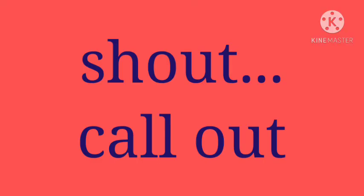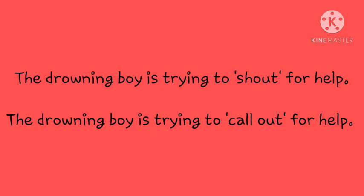The next word is 'shout.' You have to replace shout with the suitable phrasal verb 'call out.' The sentence given is: the drowning boy is trying to shout for help. Here, after 'to' I am using shout in simple present tense. So the answer is: the drowning boy is trying to call out for help. I am using the simple present form of call.